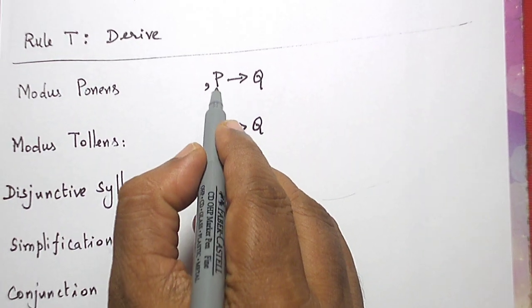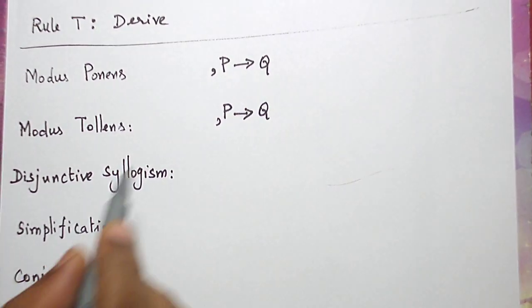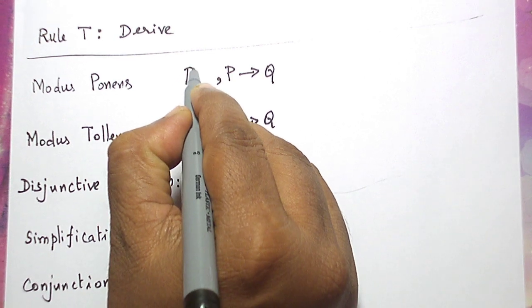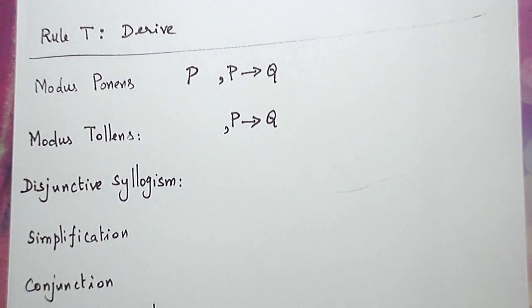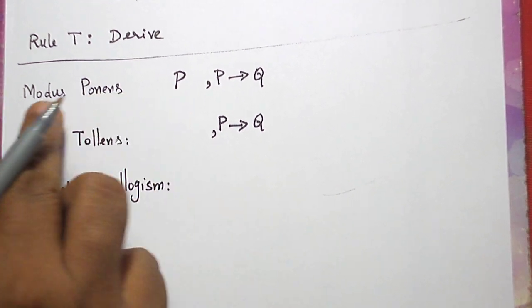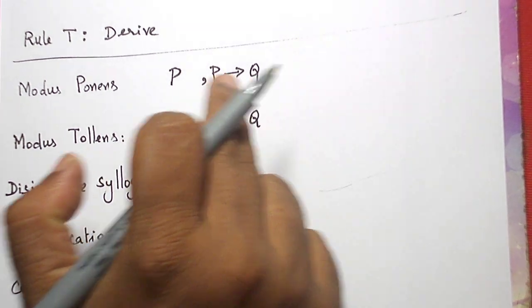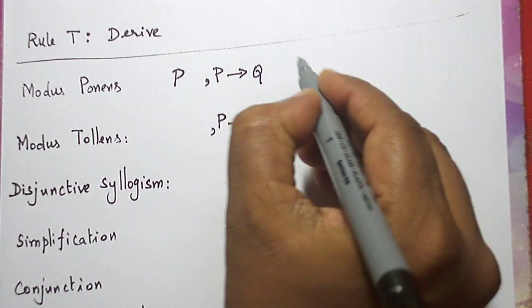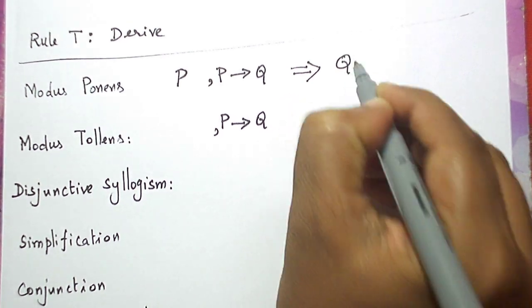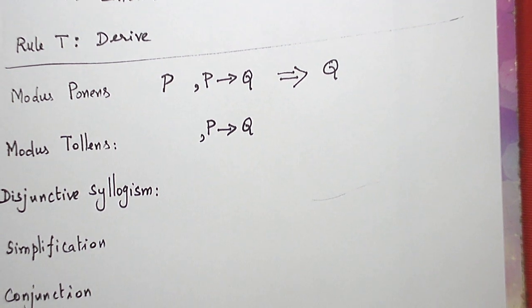If you take the conditional statement, P is the left hand side, Q is the right hand side. Now, if we have the left hand side of the conditional statement as an additional premise, as an extra premise, we have to use Modus Ponens. When we combine these two statement formulas, we shall get a statement formula Q, the right hand side, as a conclusion, as a derivation.